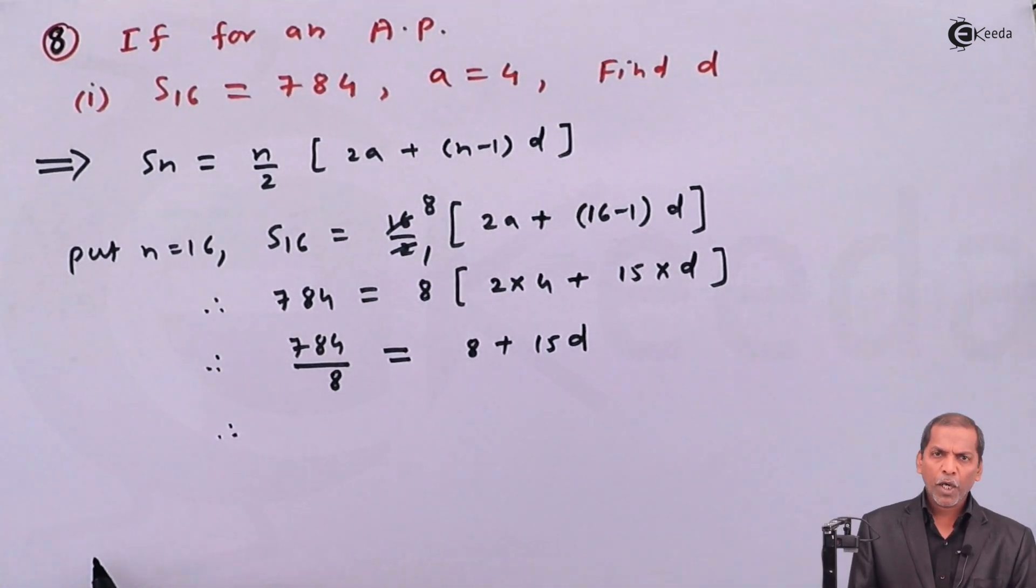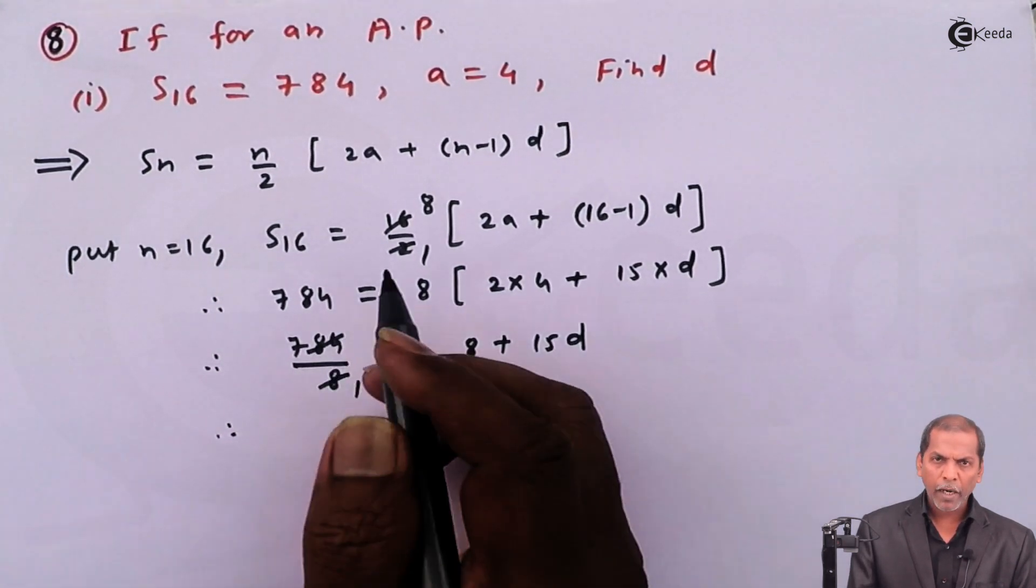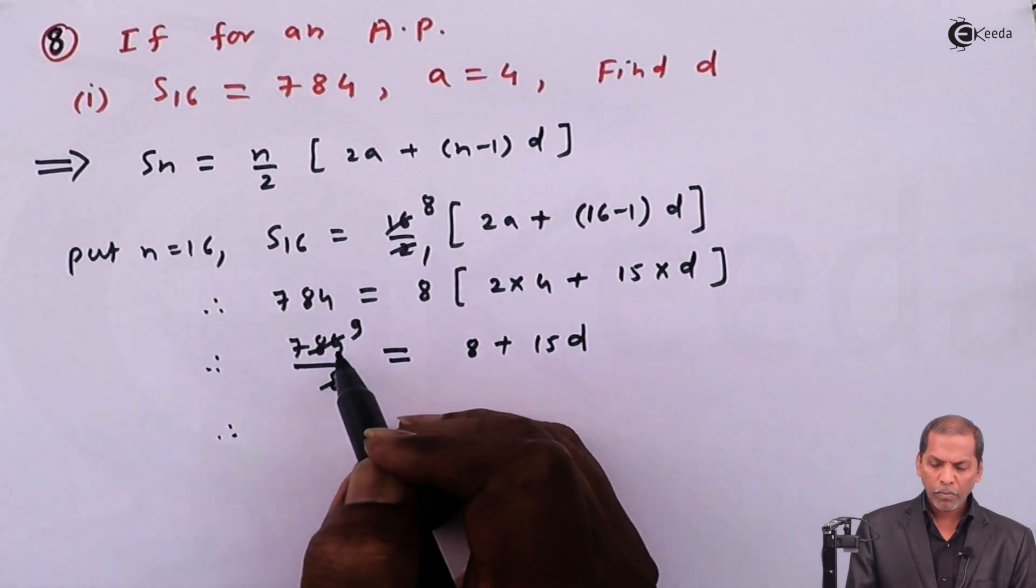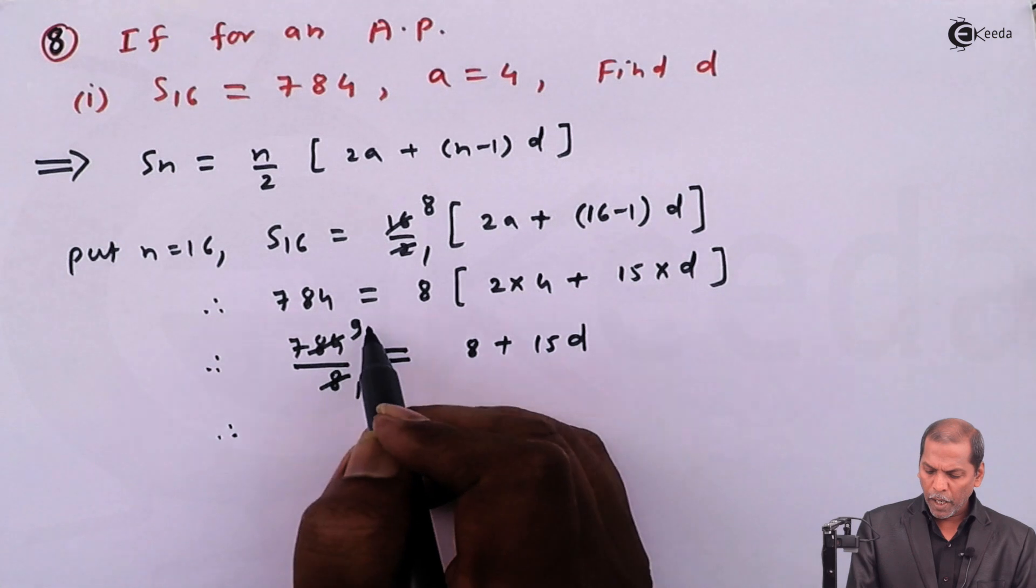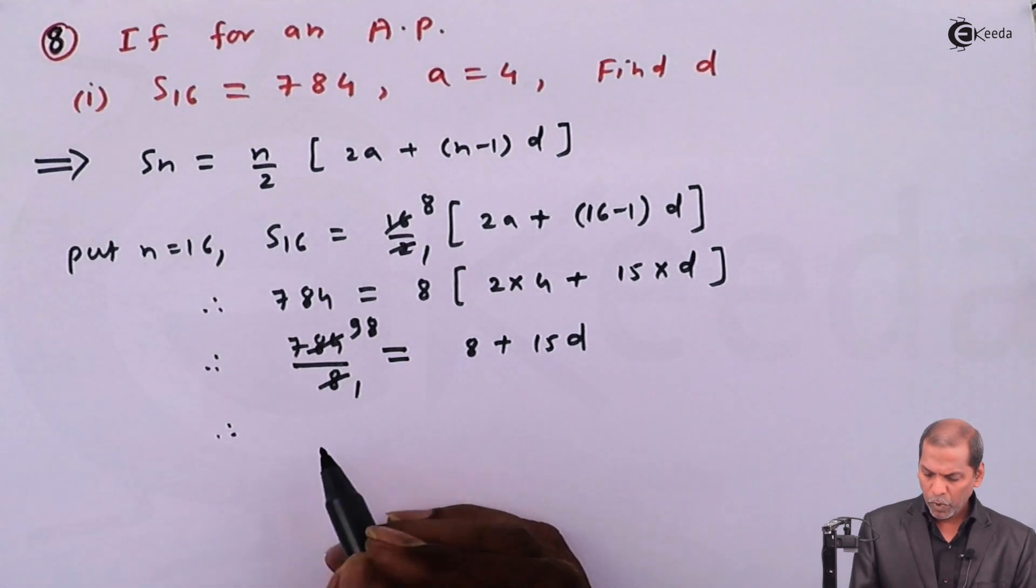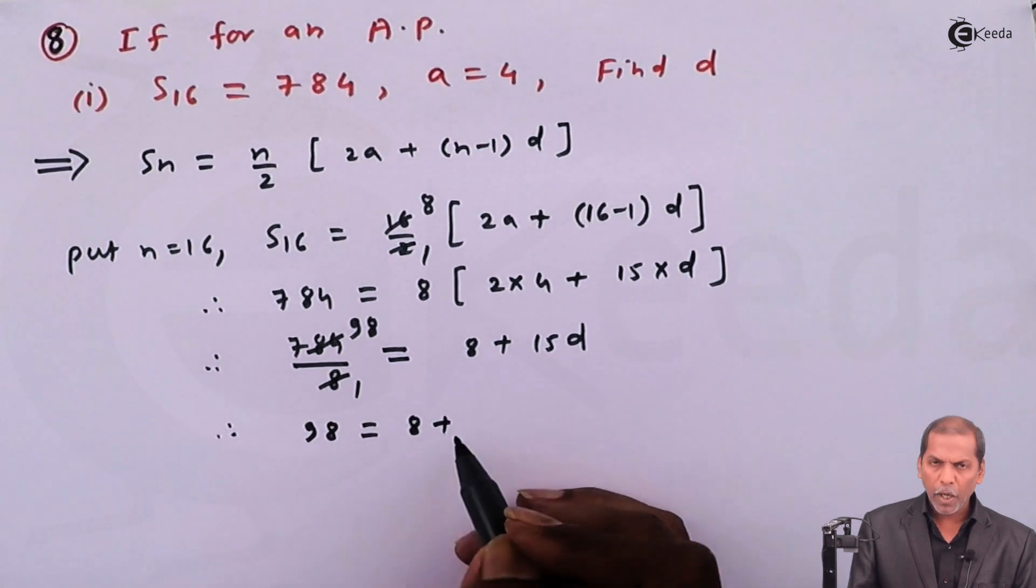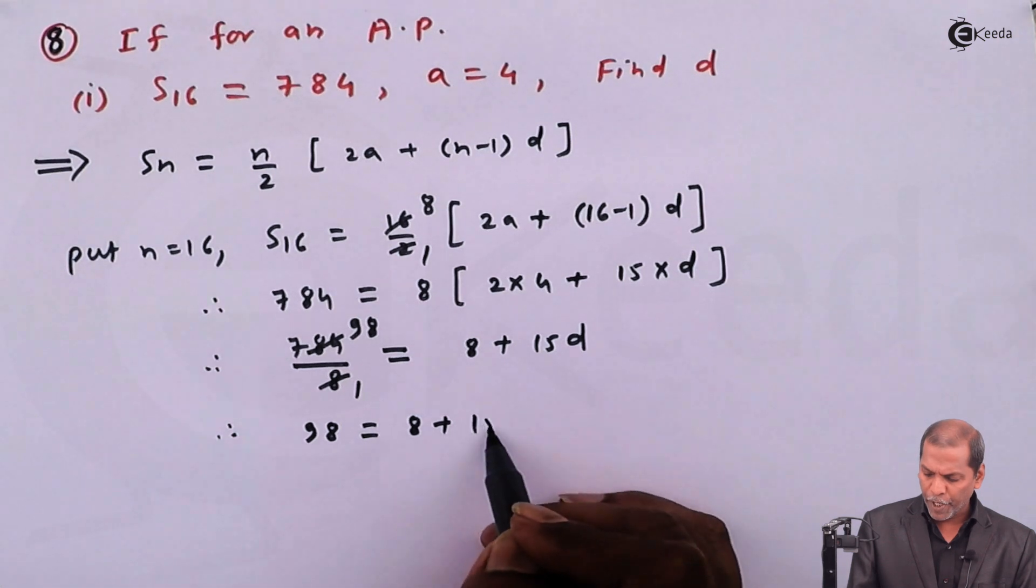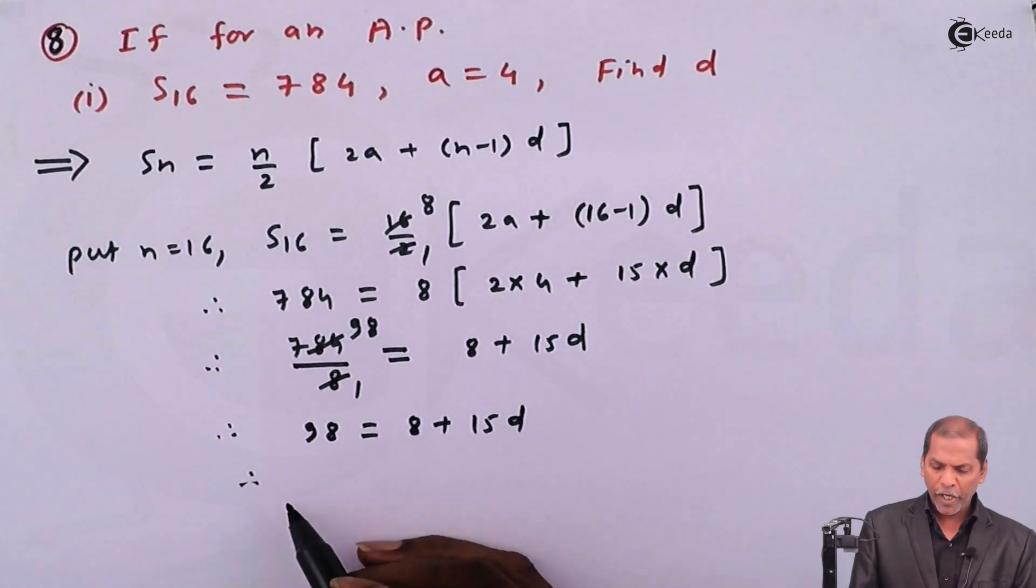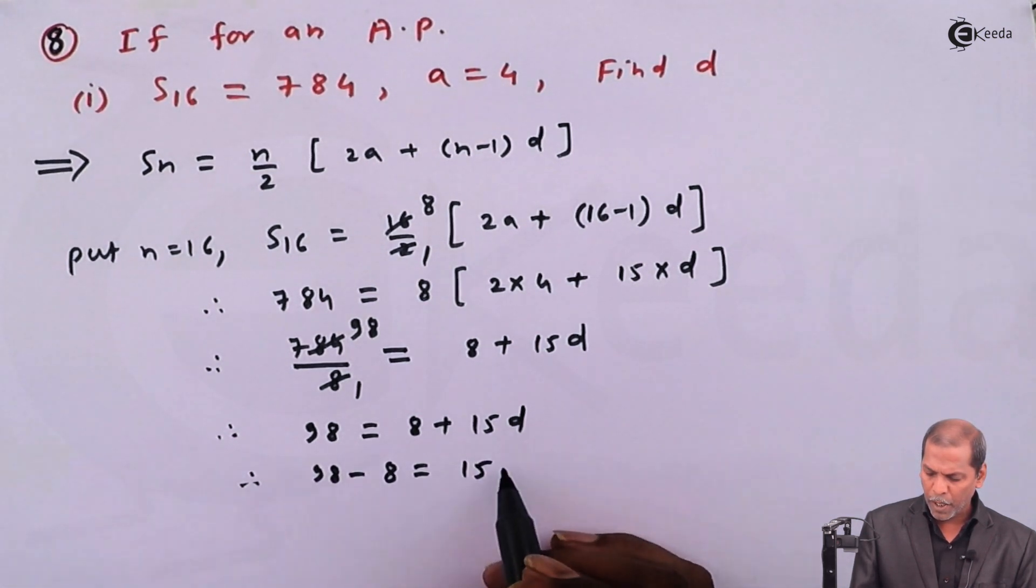Then on further simplification, 8 ones are 8, and 8 nines are 72, and then 8 eights are 64, so therefore 98 is equal to 8 plus 15d. On further simplification, we get 98 minus 8 is equal to 15d.